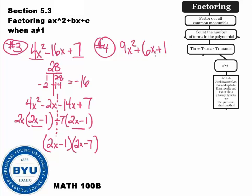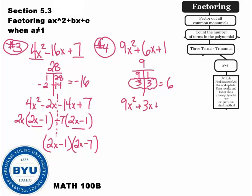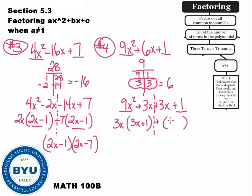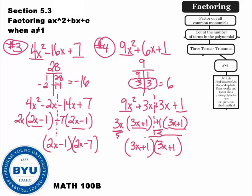Problem 4: A times C is 9 times 1 = 9. Find factors of 9 that add up to 6. There's 9 and 1 — no. There's 3 and 3 — yes! Rewrite: 9x squared plus 3x plus 3x plus 1. Factor by grouping: on the left, take out 3x, leaving (3x+1). On the right, we already have (3x+1) — we've essentially factored out a 1. Pull out the common parenthesis (3x+1), and what's left is also (3x+1). Answer: (3x+1)(3x+1).